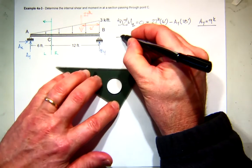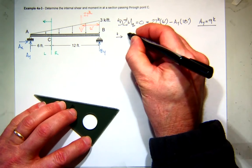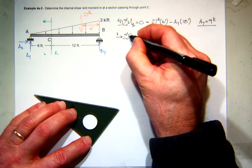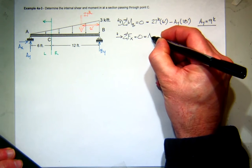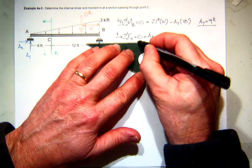And then, last but not least, I can sum forces in the X direction. I'll assume to the right it's positive. And all I have is AX, so I know it's 0.